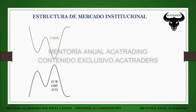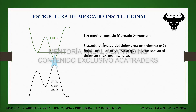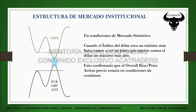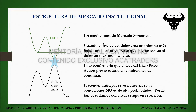Hablemos gráficamente de cómo se forman estos swings de precio simétrico comparando el DXY contra instrumentos como el euro, la libra o el dólar australiano. En condiciones de mercado simétrico, cuando el índice del dólar crea un mínimo más bajo, en pares que operen contra el dólar deberíamos ver un máximo más alto. Si en el DXY se está rompiendo un mínimo, en euro, libra, Aussie o neozelandés deberíamos ver la neutralización del máximo anterior. Esto confirmaría que el overall bias y el price action actual estarían en condiciones de continuar, y pretender anticipar reversiones no es de alta probabilidad.